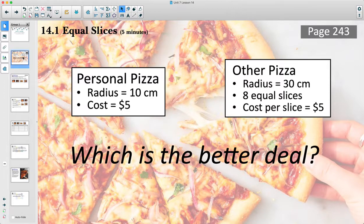We're trying to decide which of these pizzas is a better deal. We've got one that's a personal sized pizza with a radius of 10 centimeters and it costs $5. Then another pizza place has a pizza that's much larger with a radius of 30 centimeters, but then they're going to divide it into eight equal slices and each slice costs $5. So which pizza is the better deal? Come up with a strategy, figure it out, and then come back to the video.